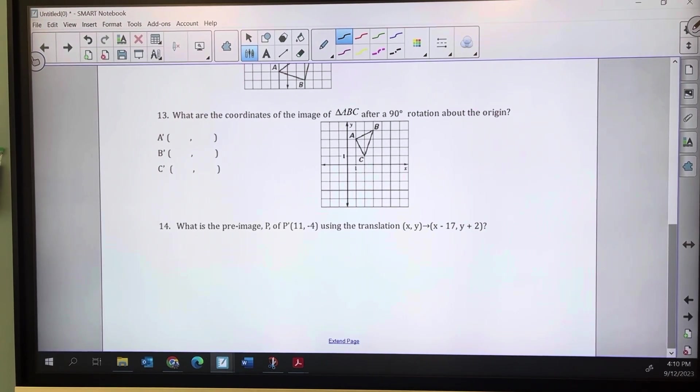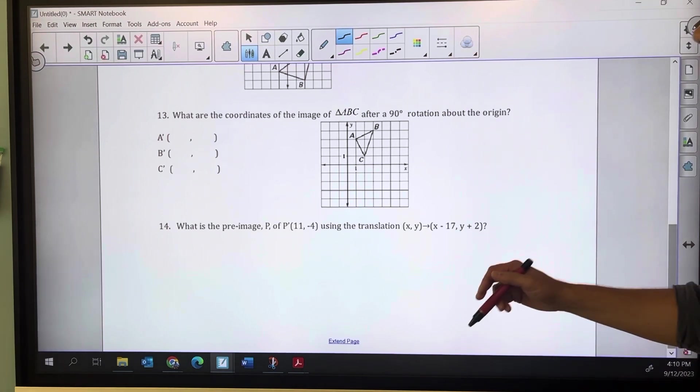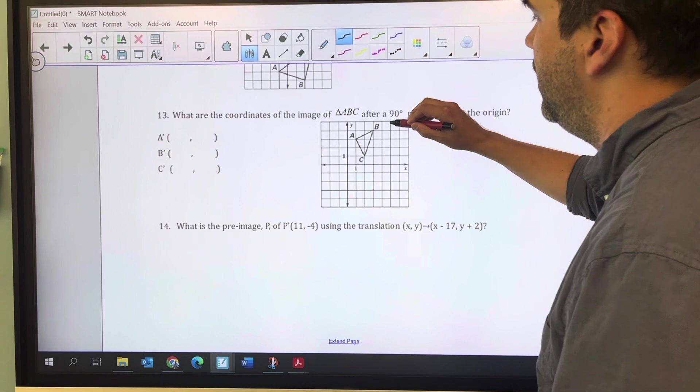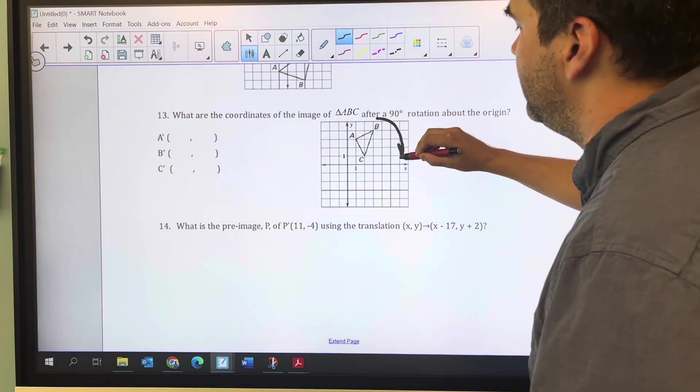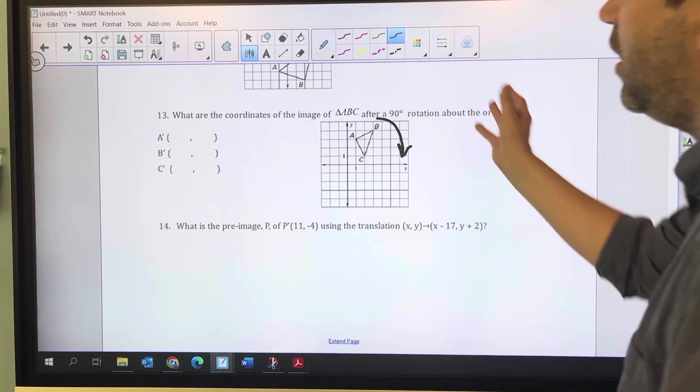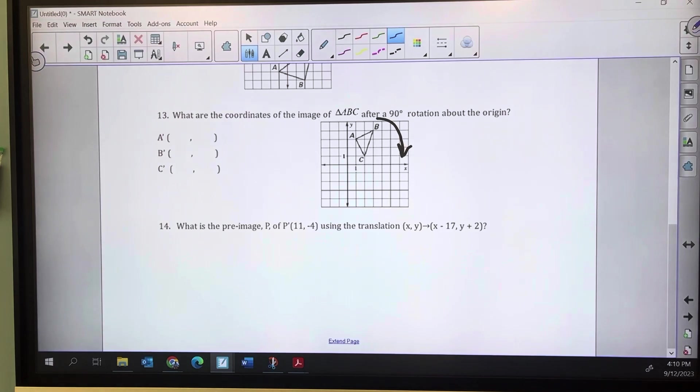Rotation. So we're going to rotate triangle ABC about the origin 90 degrees. Because it's positive, I know that's 90 degrees clockwise, and now I need to figure out exactly how to do that.